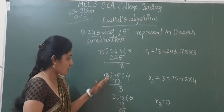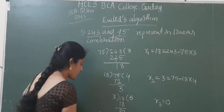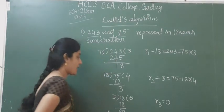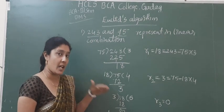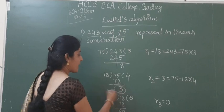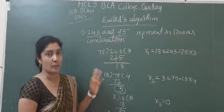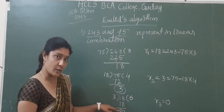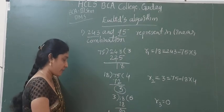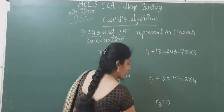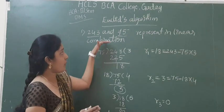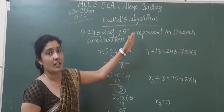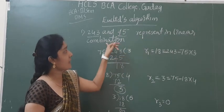After the completion of the procedure, we have to write the GCD. GCD of 243 and 75 — the last non-zero remainder is nothing but 3, and this will be the GCD of these two numbers. The last non-zero remainder is 3; here we have a 0 remainder, so the last non-zero remainder is 3. Therefore GCD of 243 and 75 is 3. Half of the question is solved. The next part is representing it in linear combination.